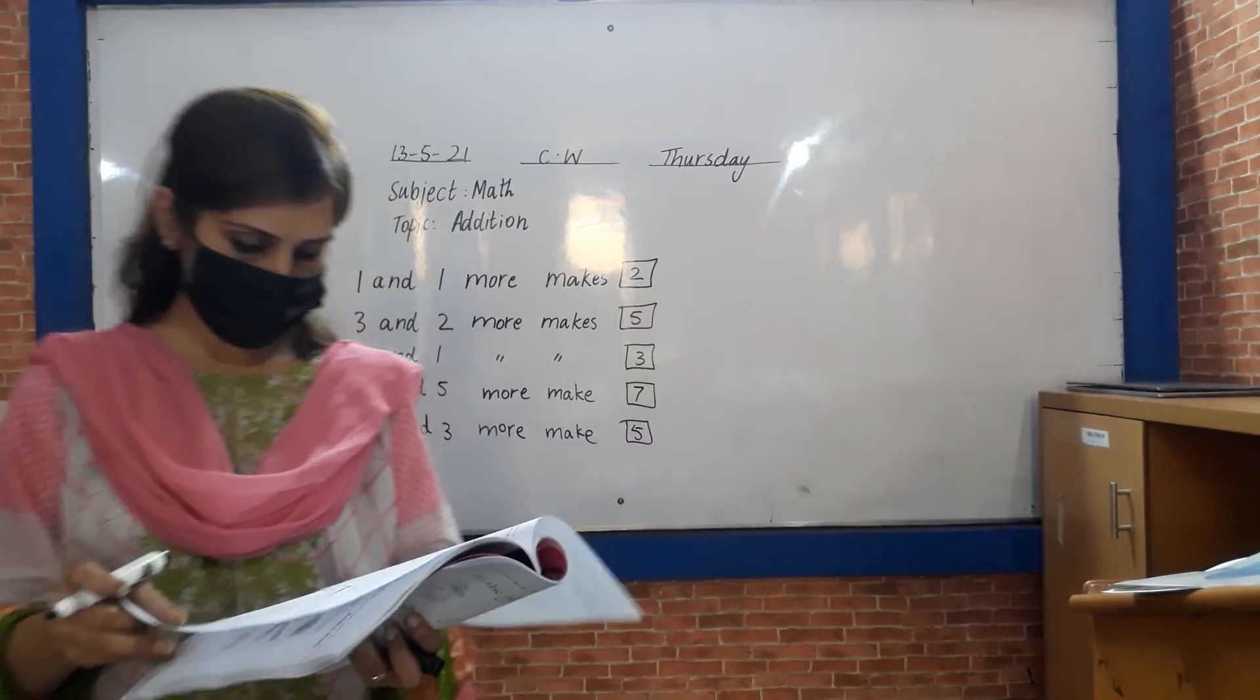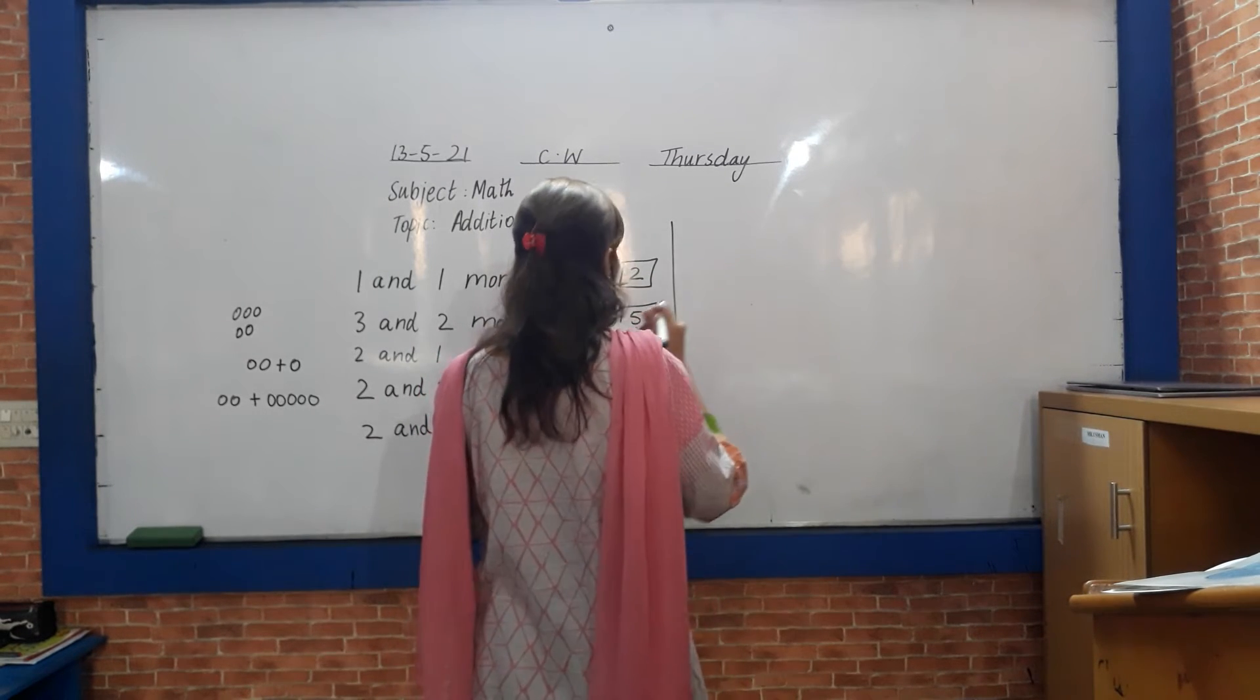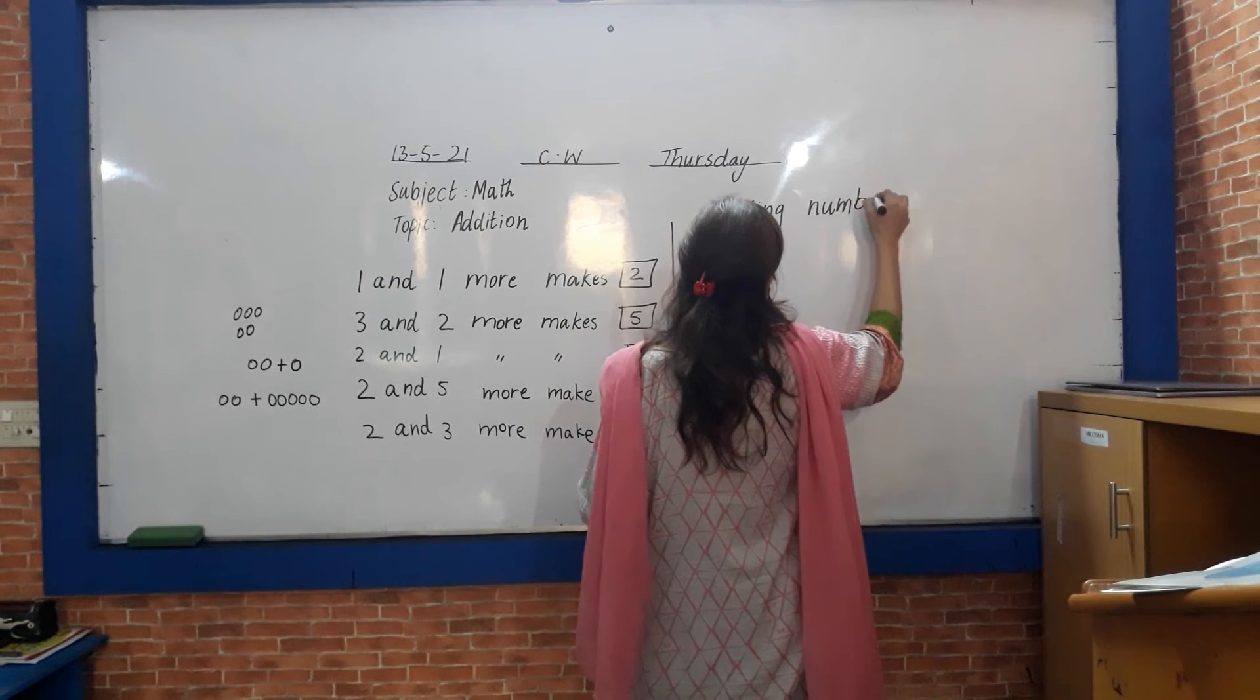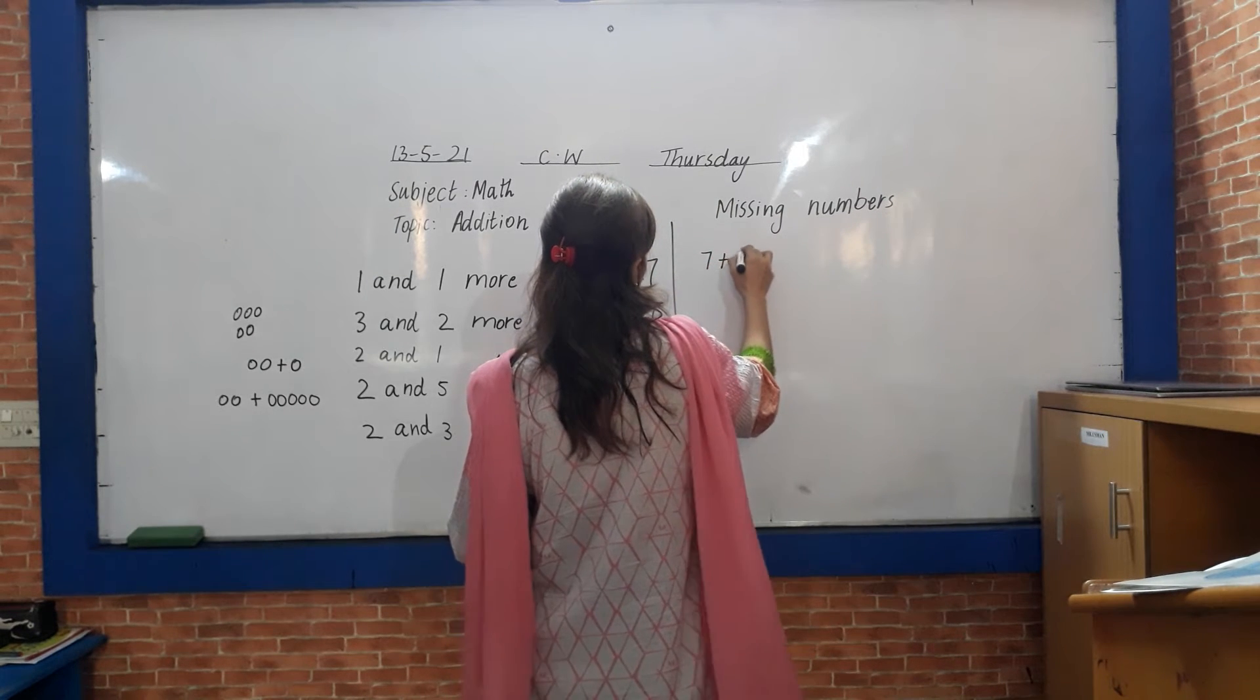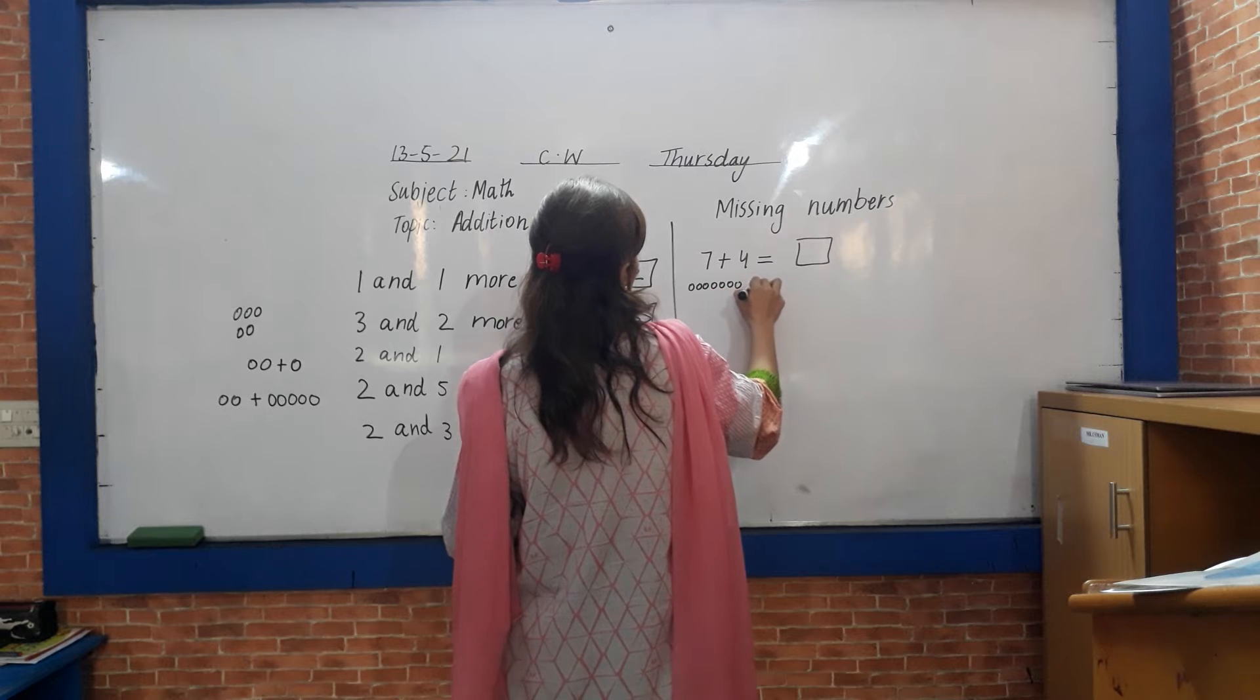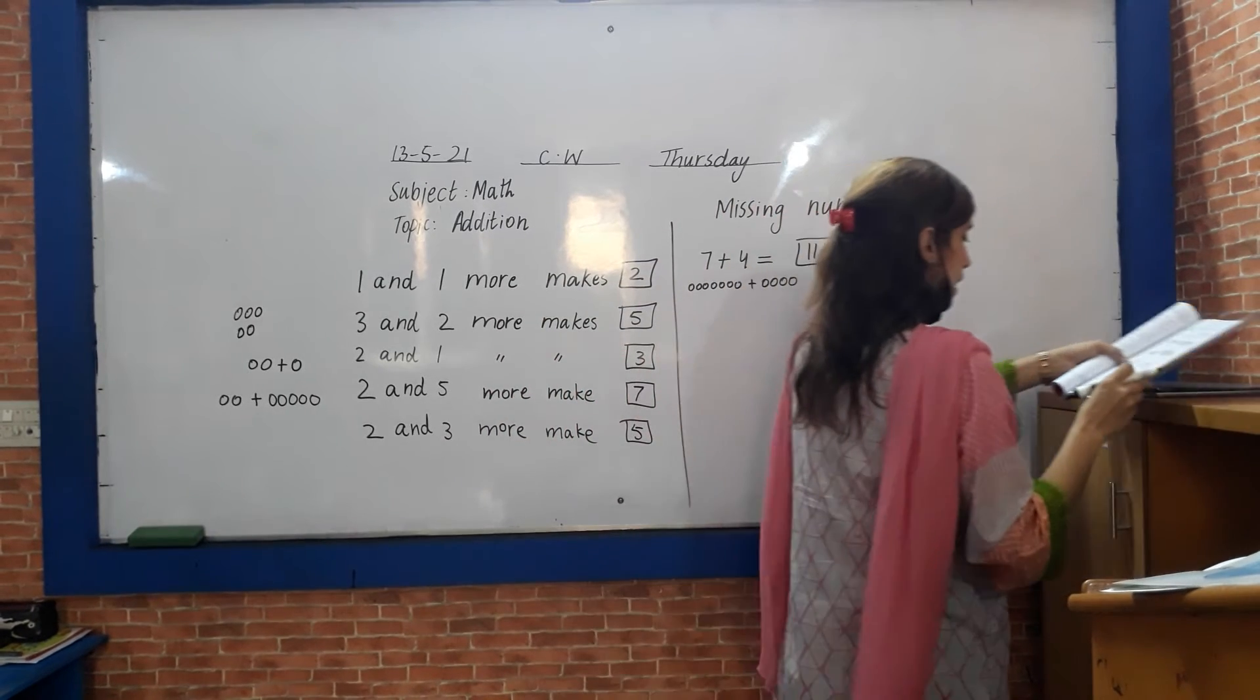Okay, now open the next page. You will count the number and write it down here. Seven plus four, it's the missing number. Number two. Seven plus four. One, two, three, four, five, six, seven. Plus four: seven, eight, nine, ten, eleven. Answer is eleven.